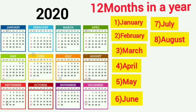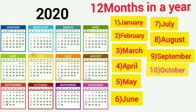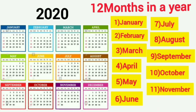Ninth month is September. Tenth month is October. Eleventh month is November and twelfth month is December.